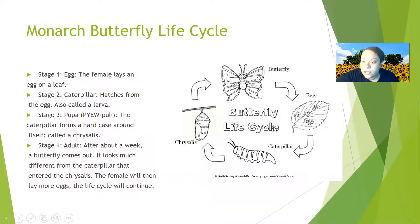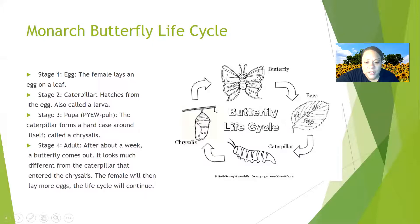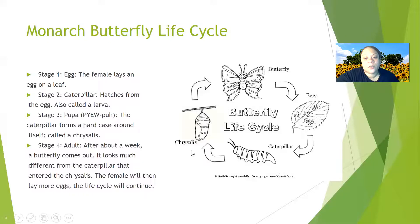Here's the butterfly life cycle. Stage one: the female lays eggs on a leaf. Stage two: the caterpillar hatches from the egg — this is also called a larva. Stage three: the pupa — the caterpillar forms a hard case around itself called a chrysalis. Stage four: the adult butterfly — after about a week, a butterfly comes out looking much different from the caterpillar. The female then lays more eggs and the life cycle continues.